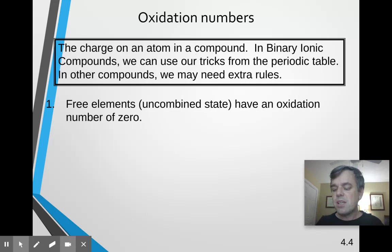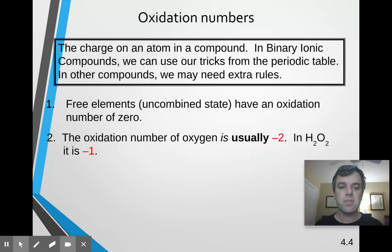So some things to know for determining oxidation numbers. If you have an element that's just by itself, its oxidation number is 0. So if you just have solid potassium or solid aluminum, or if you have oxygen gas as an O2 molecule, it's just that one element. The charge on the element is 0.